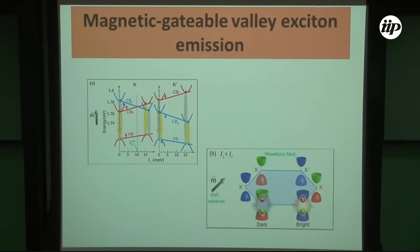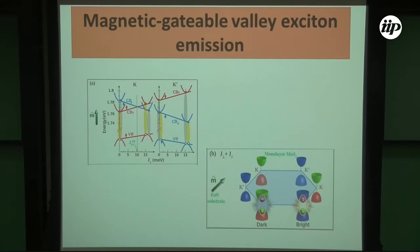What we want to study is this: in one valley we have a bright exciton, and in another valley we can control the character of the exciton — either bright or dark. This dark exciton can then be made bright using the exchange field. So the main idea is: first we use exchange interaction to change from bright exciton to dark exciton, and second we make this dark exciton brighten using the exchange field.